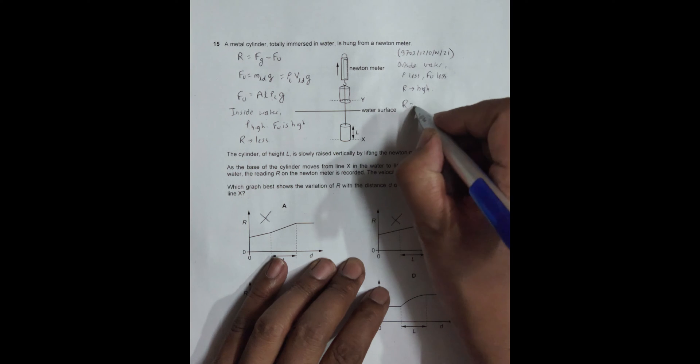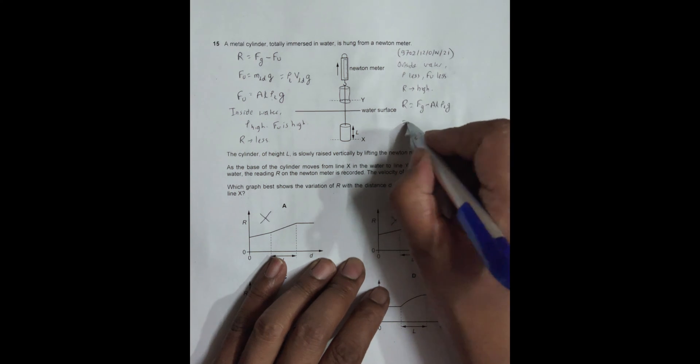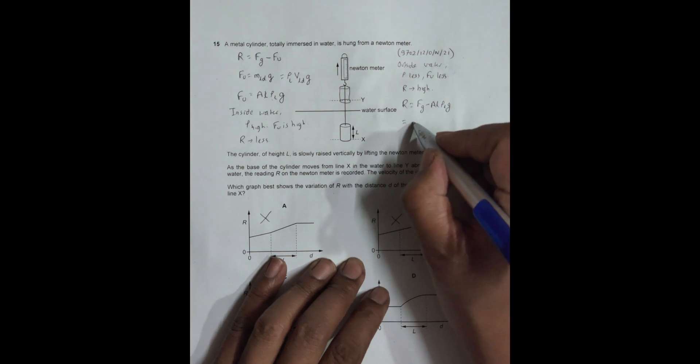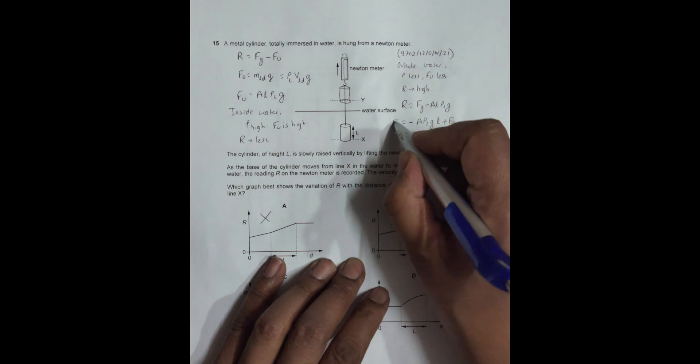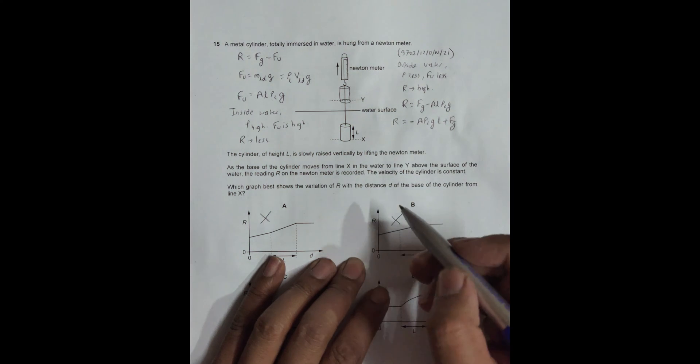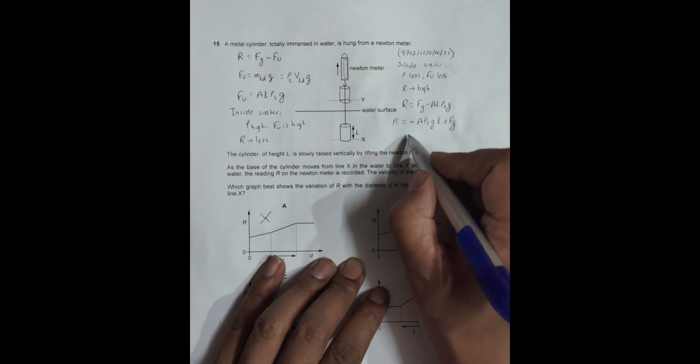Now R equals FG minus A×L×ρ×g. I'll rewrite the equation as R equals negative A×ρ×L×g times L plus FG. When this is partially immersed, let it be Y. Then R equals negative A×ρ×L×g times Y plus FG.